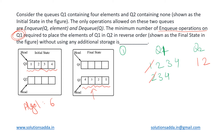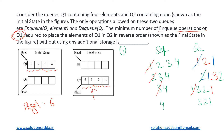We dequeue 1 from Q2 and enqueue it back into Q2 itself, so Q2 now has 2 and 1, while Q1 has 3 and 4. Next, we dequeue 3 from Q1 and enqueue it into Q2, giving Q2 the contents 2, 1, and 3. We then dequeue 2 from Q2 and enqueue it back, making the contents 1, 3, 2. We dequeue 1 and enqueue it back, giving us 3, 2, 1. Then we dequeue 4 from Q1 and enqueue it into Q2.